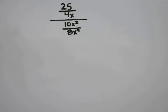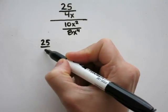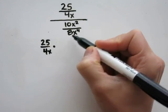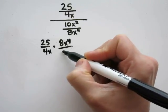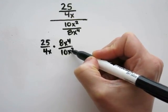Problem 15: 25 over 4x divided by 10x squared over 8x to the fourth power. The first step will be to rewrite the problem as multiplication so it's easier to solve. You'll have 25 over 4x times the reciprocal of this, which is 8x to the fourth power over 10x squared.